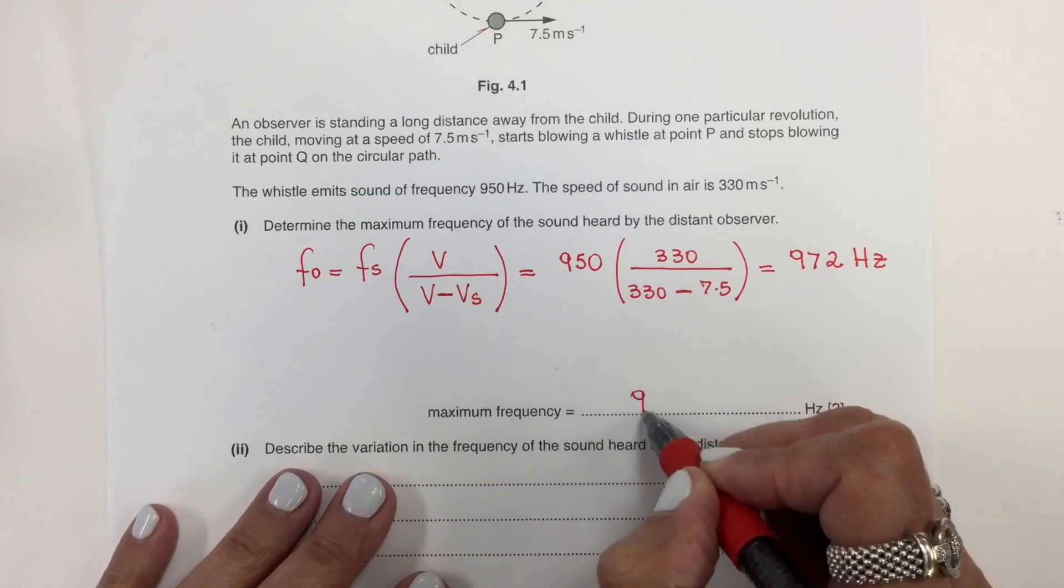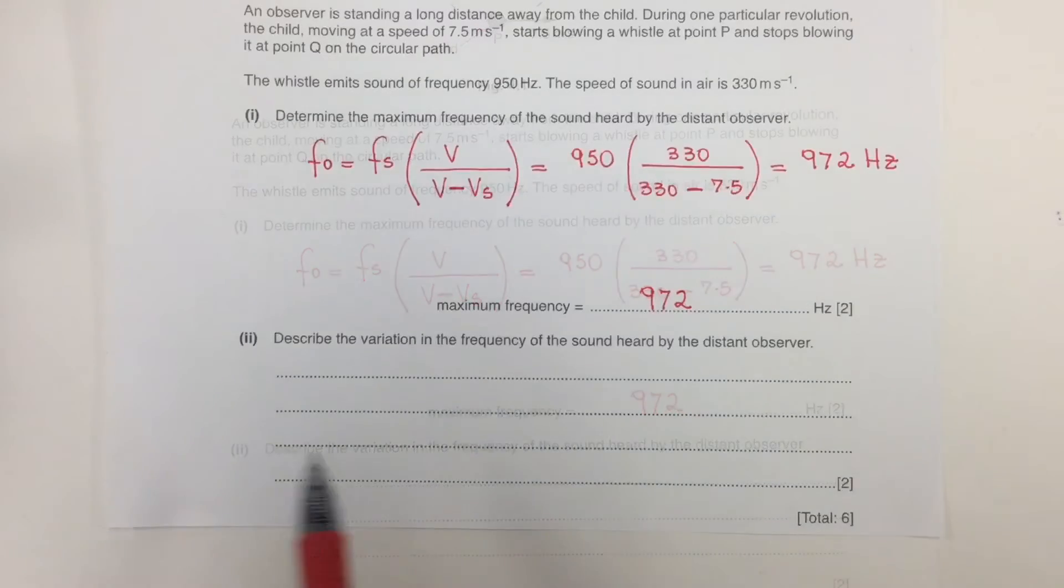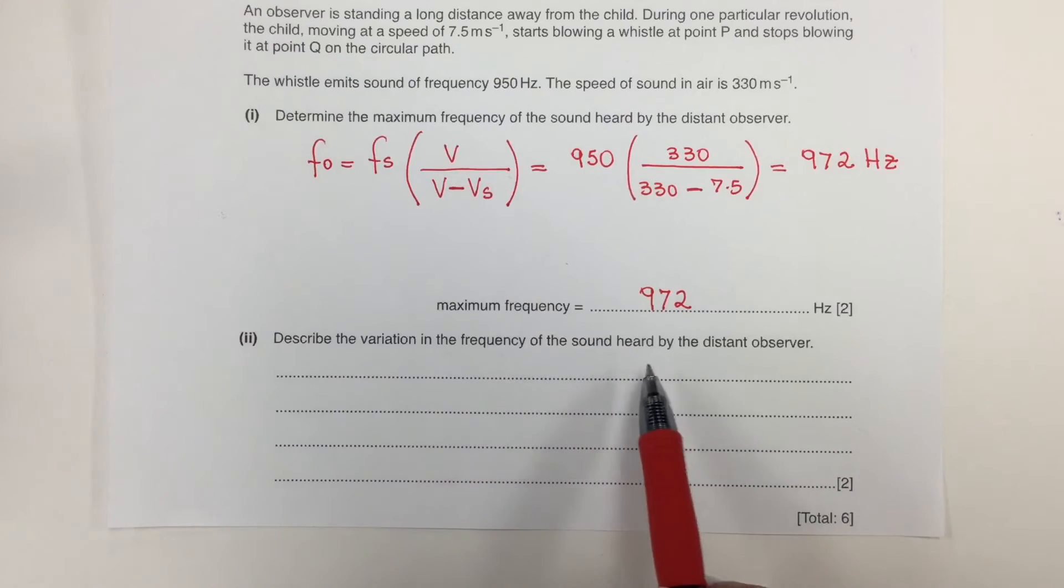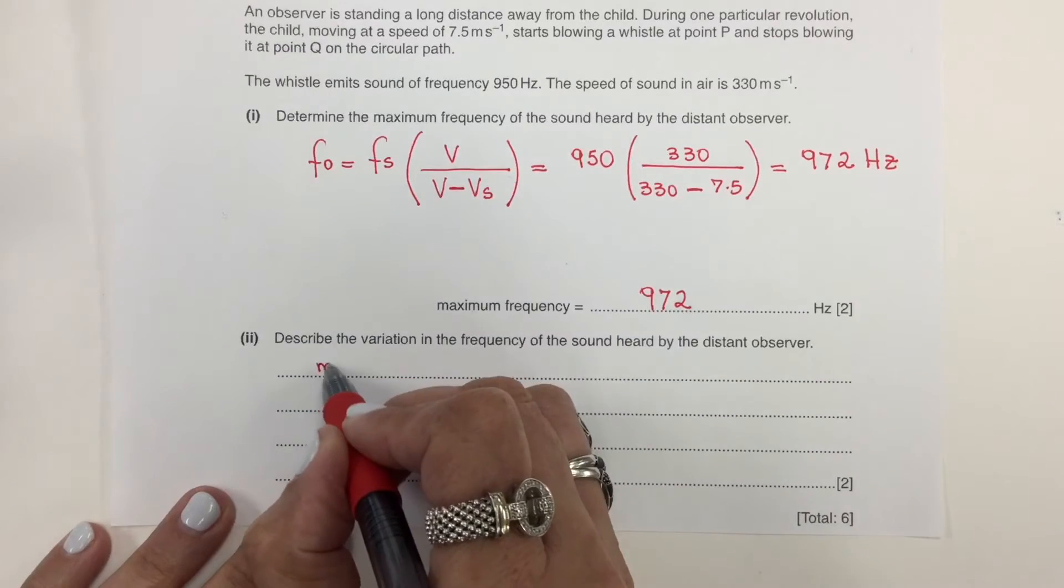So this is due to the Doppler effect. The next question: describe the variation in the frequency of the sound heard by the distant observer. Okay, so you know the maximum frequency here.